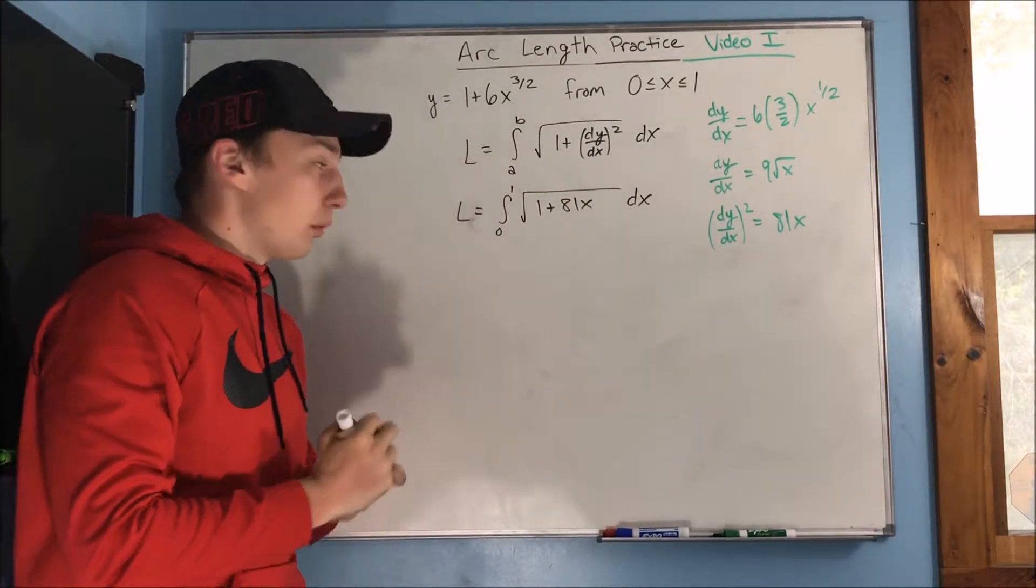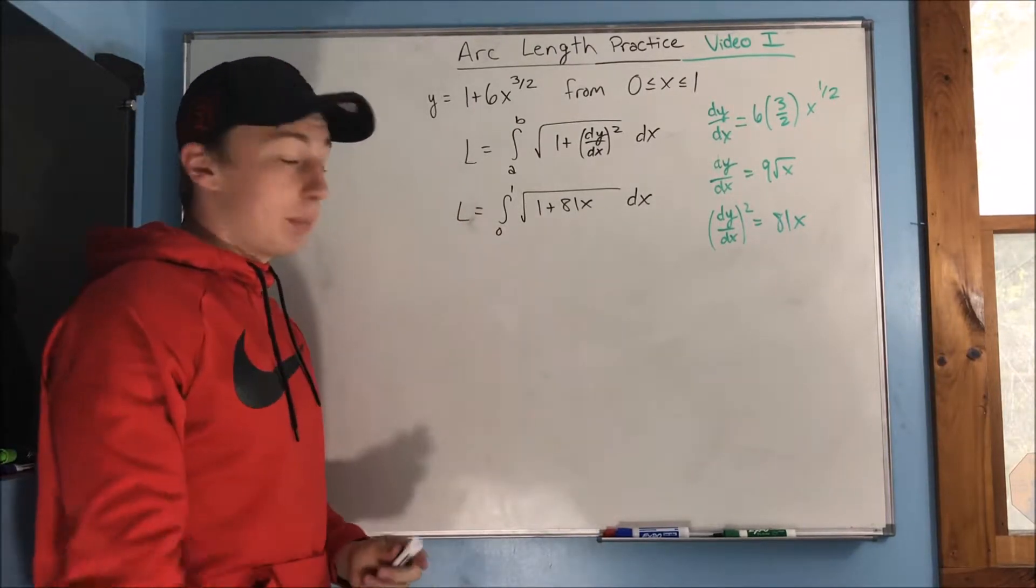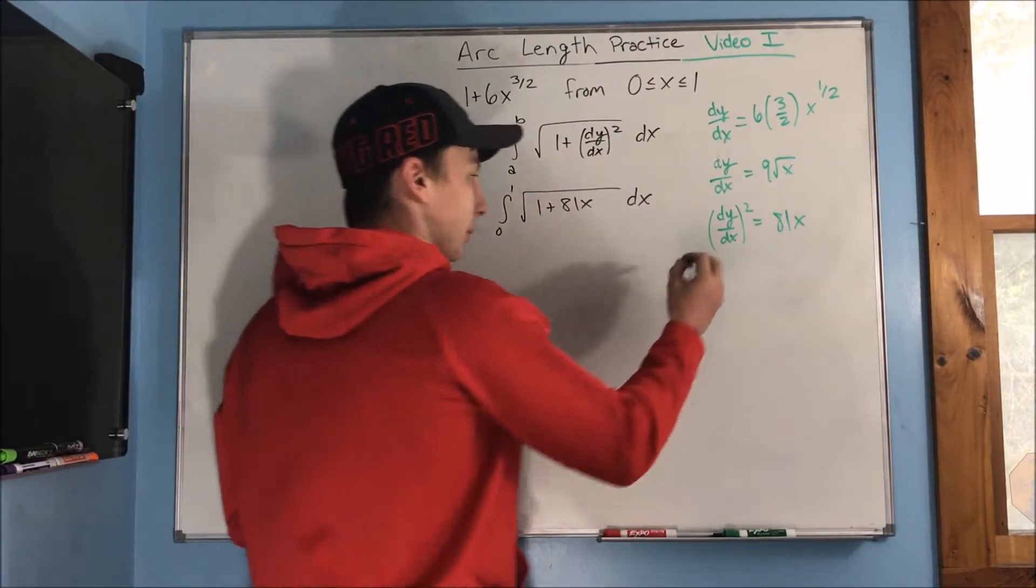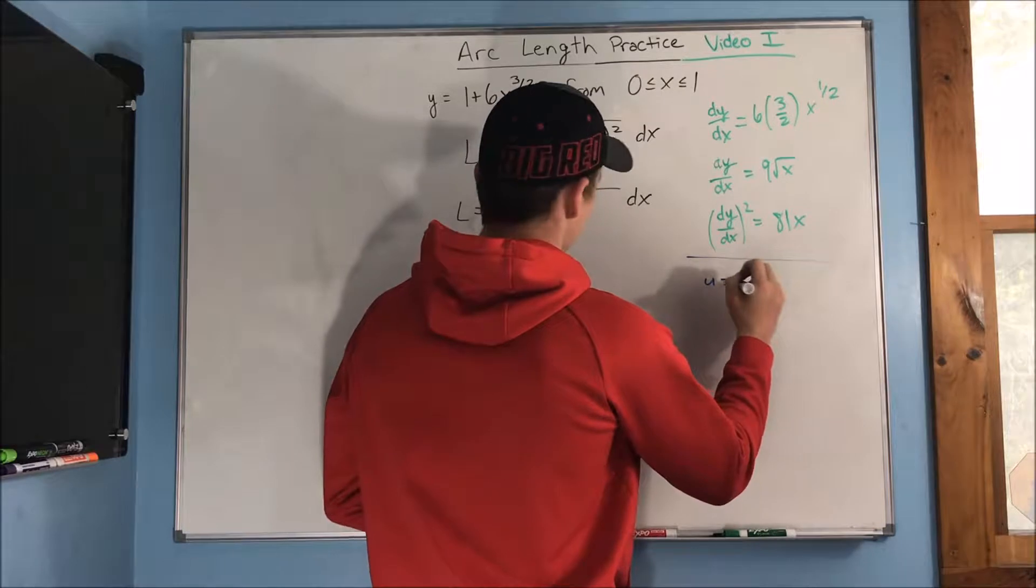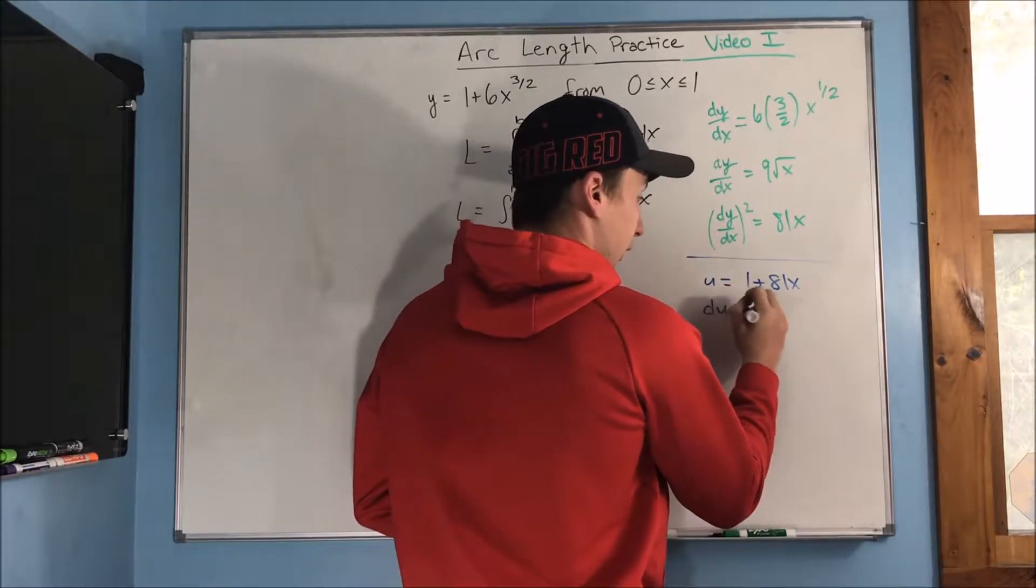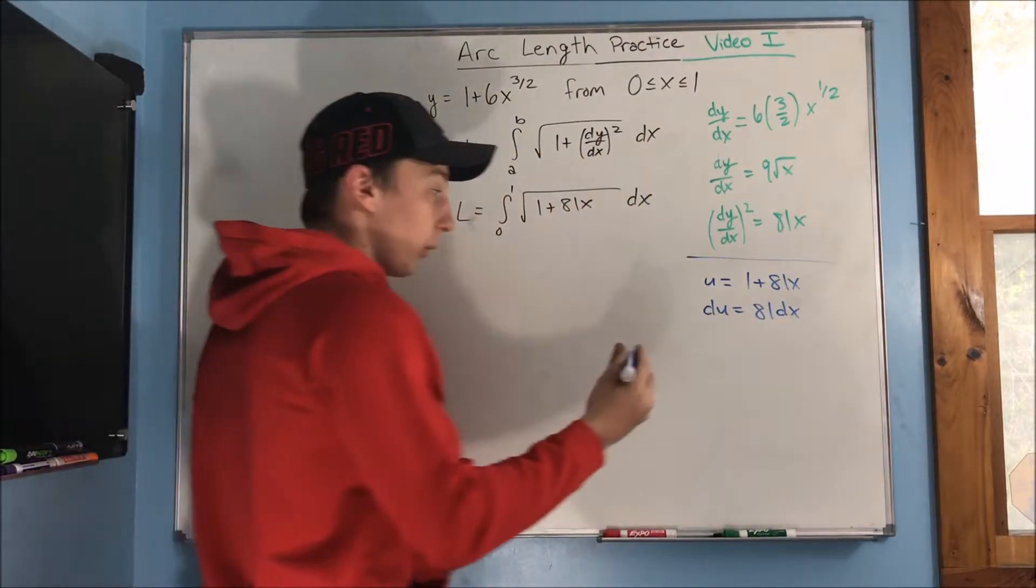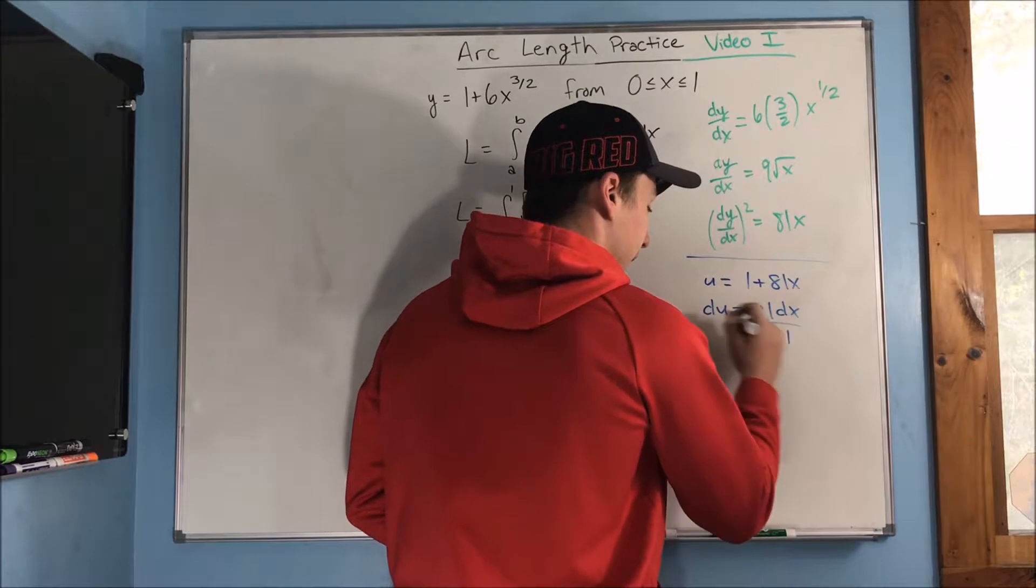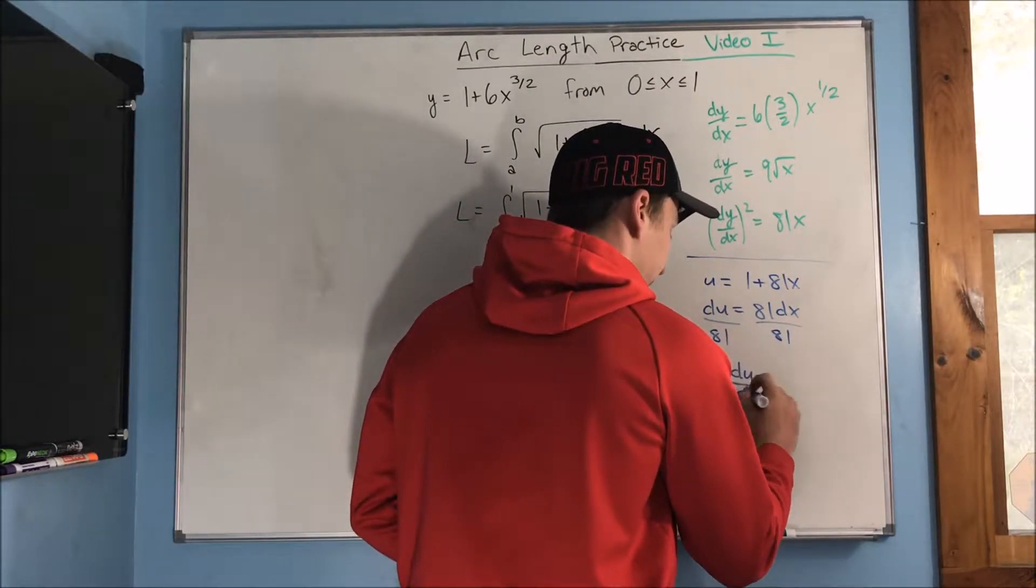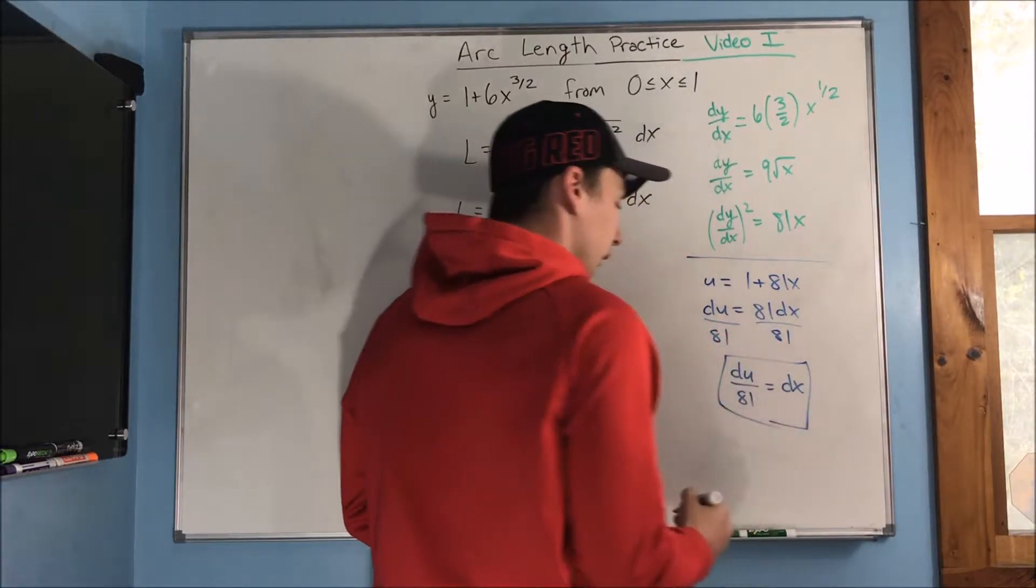Well, how do we solve this? If we set u as 1 plus 81x, our problems will be solved. We just perform a simple u substitution. u equals 1 plus 81x, so du is 81 dx. Since we don't have an 81 laying around here anywhere, we have to divide by 81 on both sides. So we get that du over 81 equals dx.